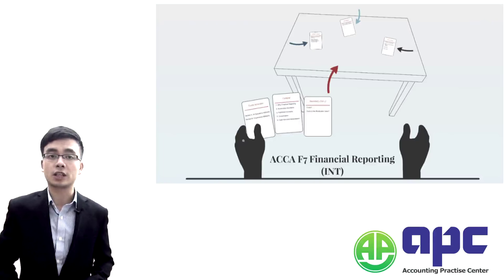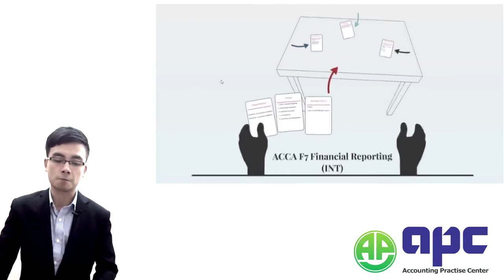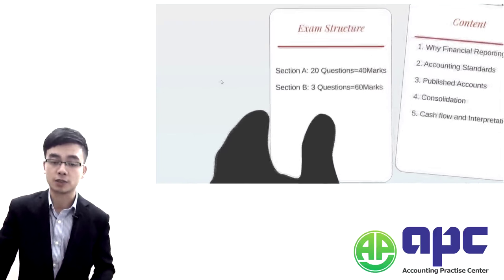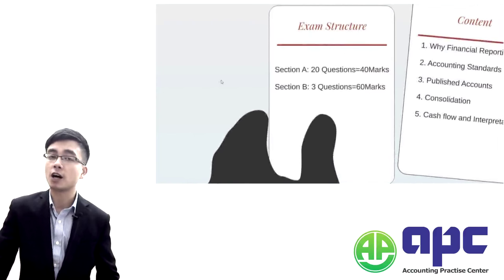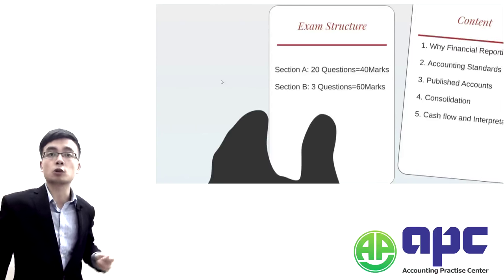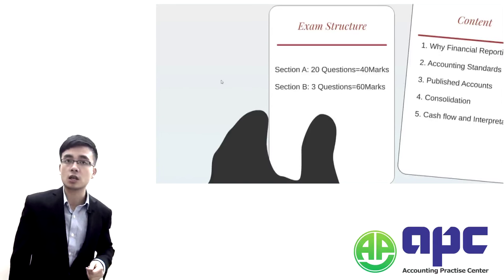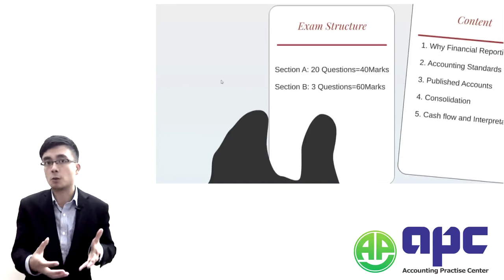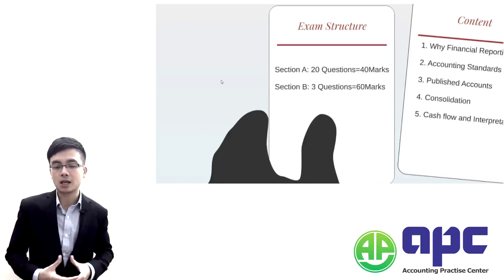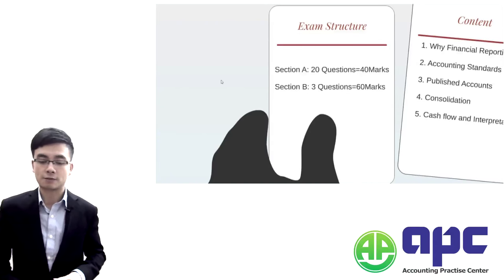The exam format of F7 will be 3 hours and 15 minutes reading time. It's divided into two sections: Section A has 20 multiple choice questions totalling 40 marks, and Section B has three questions to prepare financial statements totalling 60 marks. That's the exam structure of F7.